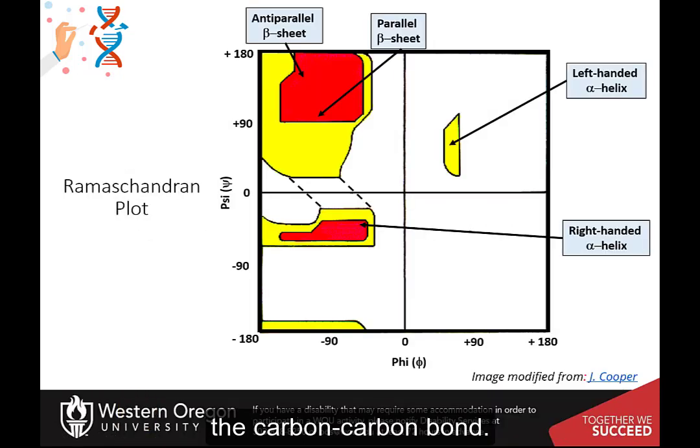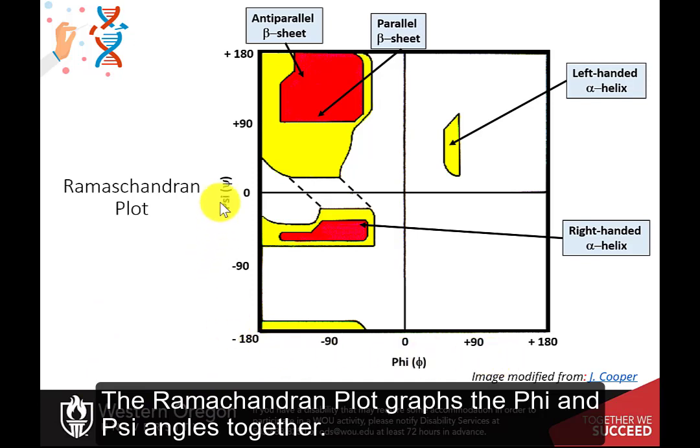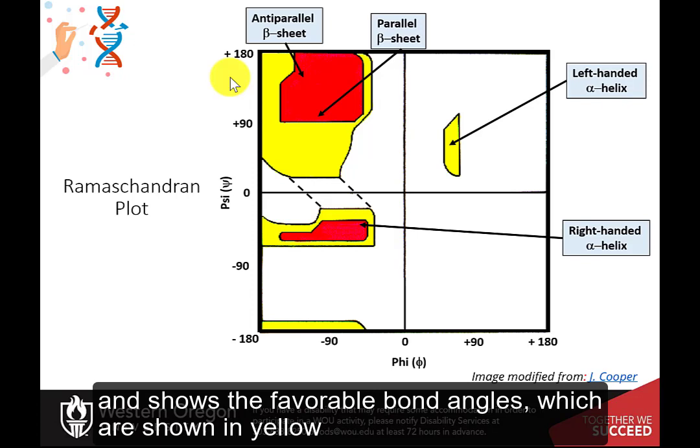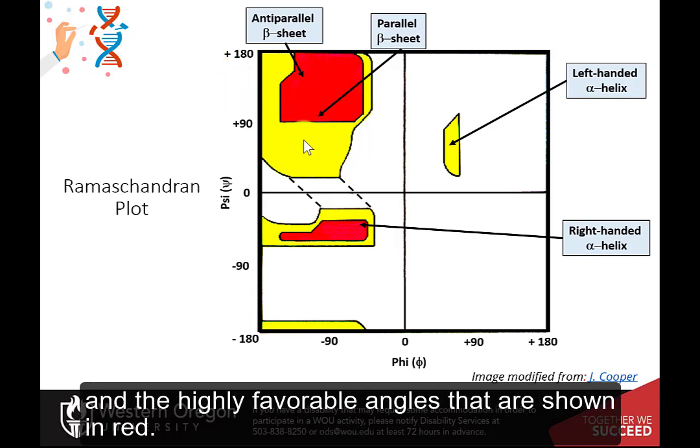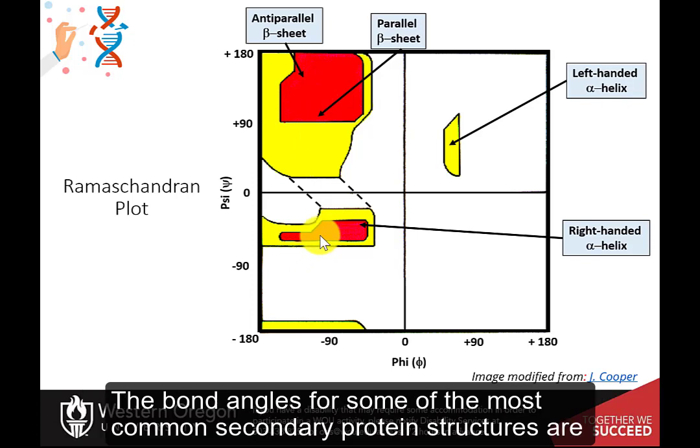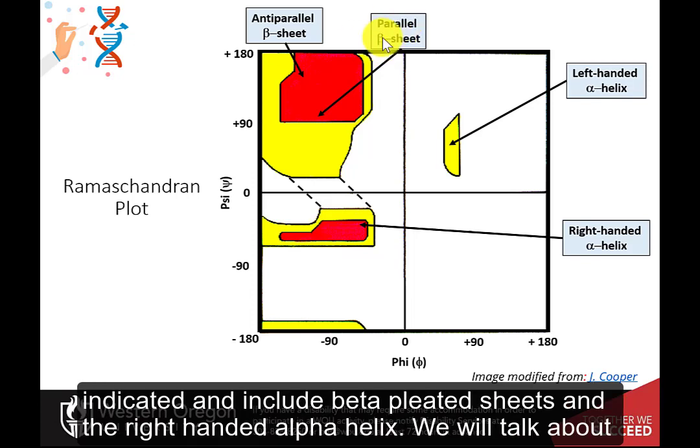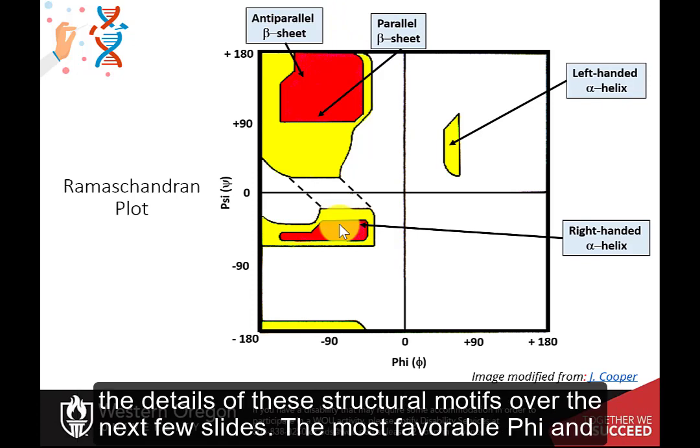The Ramachandran plot graphs the phi and psi angles together and shows the favorable bond angles, which are shown in yellow, and the highly favorable angles that are shown in red. The bond angles for some of the most common secondary protein structures are indicated and include beta-pleated sheets and the right-handed alpha helix. We will talk about the details of these structural motifs over the next few slides.